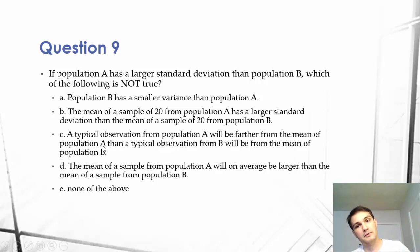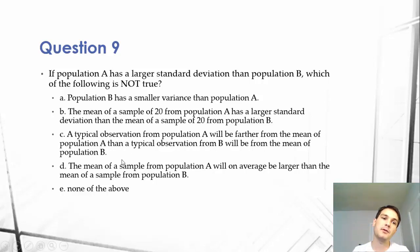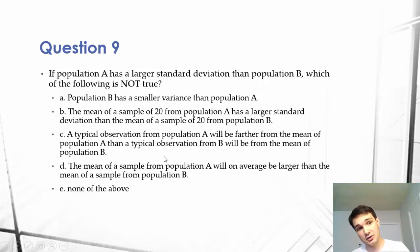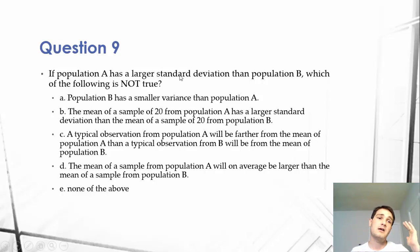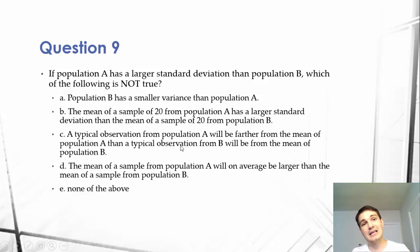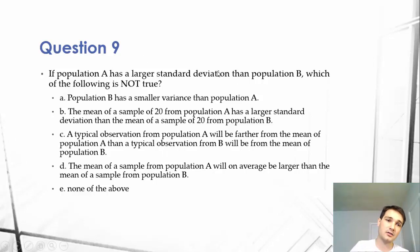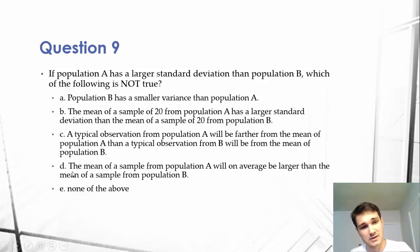C: A typical observation from population A will be farther from the mean of population A than a typical observation from B from the mean of population B. That's another definition of standard deviation. So A, B, and C are all great at defining the definition of standard deviation.